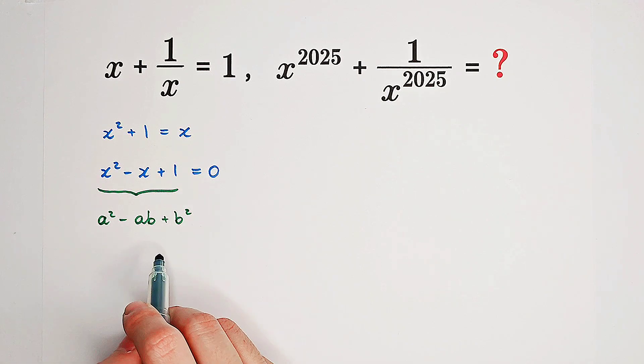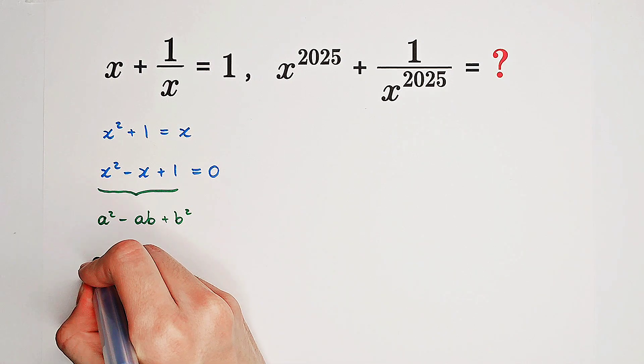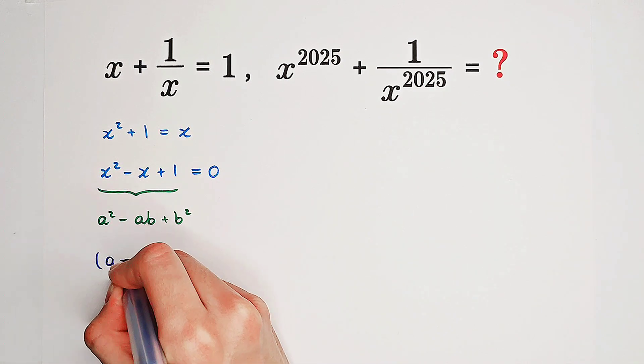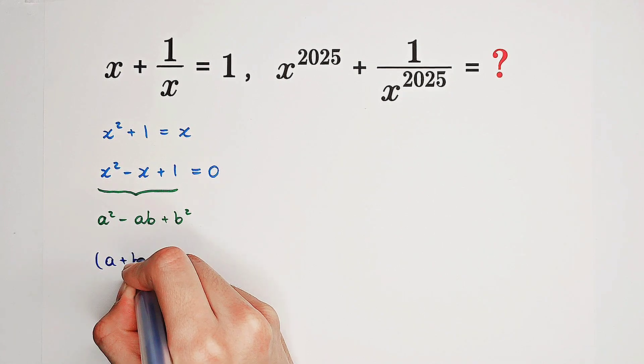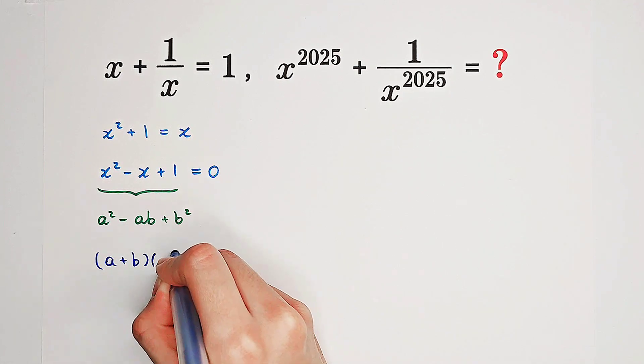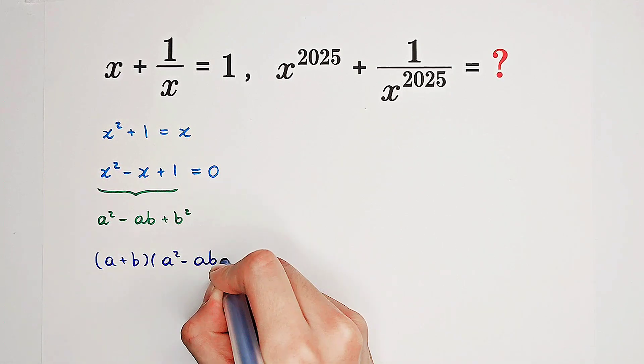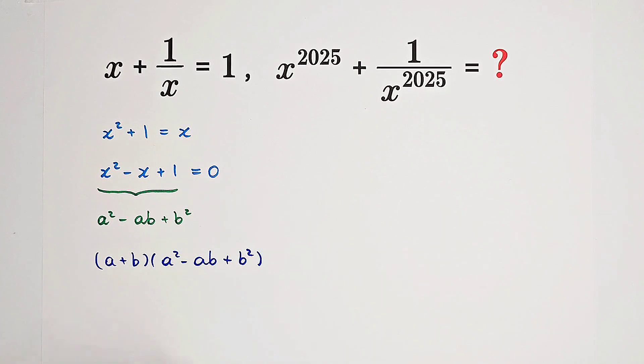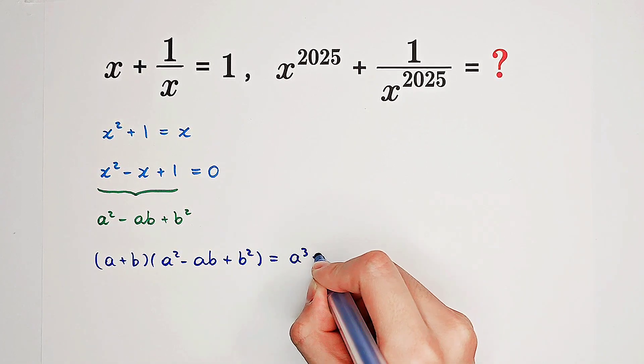And this one actually reminds us of a plus b times a squared minus a b plus b squared. It is the factorization of a cubed plus b cubed.